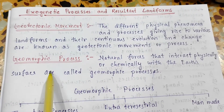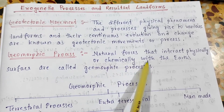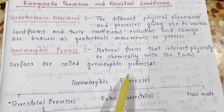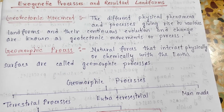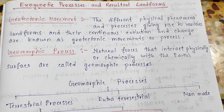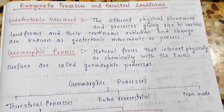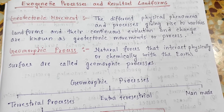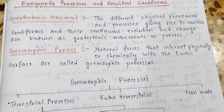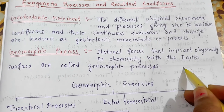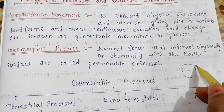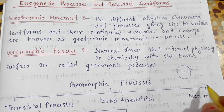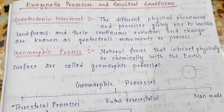Now we learn about geomorphic process. Natural forces that interact physically or chemically with the earth's surface are called geomorphic processes, which means the physical and chemical processes that have been working since the birth of the earth to create, change, reform or rebuild a landform. The processes that act inside and outside the earth's surface and lead to formation of various landforms are called landform creating processes or geomorphic processes.